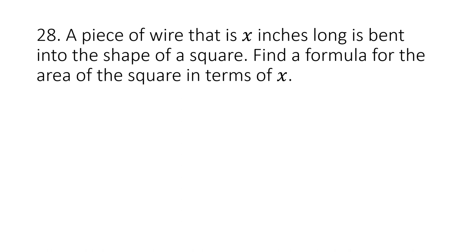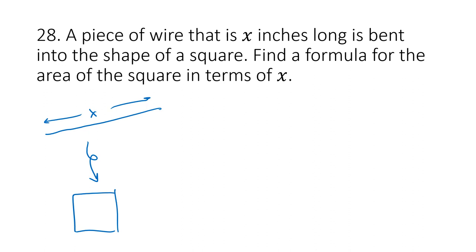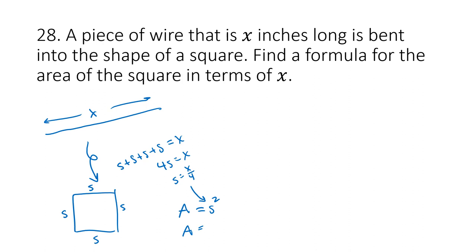For a wire x inches long bent into a square: let the side length be s, so area equals s². The perimeter of the square must equal x, meaning 4s equals x, so s equals x/4. Plugging into the area formula: area equals (x/4)² equals x²/16. So the area in terms of x is x²/16.